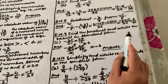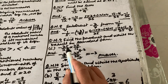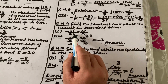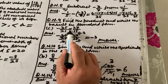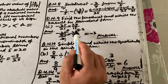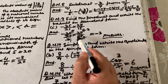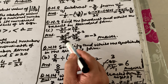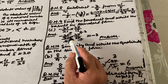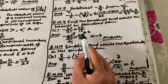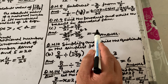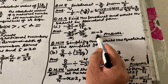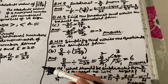Find the product and write the result in standard form. To find the product of the fractions, we cancel the numerator and denominator with common factors. After simplification, the answer comes out to −3.